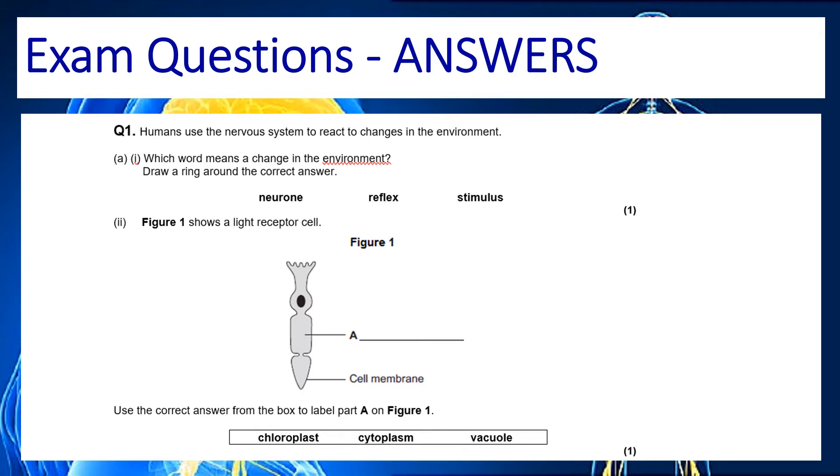Question one, we're looking for the word that means a change in the environment. So our answer here is stimulus because a stimulus stimulates your body to do something. The light receptor cell, although it's an odd shape, it's still just a cell like any other animal cell that we looked at earlier in the year. So we are looking at the cytoplasm.